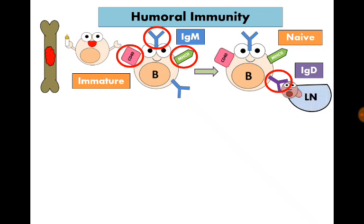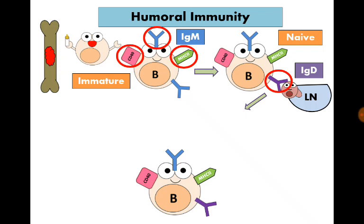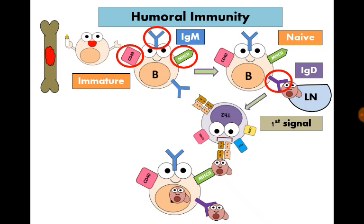One day a circulating B cell while passing in a lymph node meets an antigen which it can recognize by its receptors and thus activation process of these B cells starts. The first signal for activation is the attachment between the antigen and the immunoglobulin D which is the B cell receptor. The B cell internalizes the antigen and shows it on its surface attached to MHC class 2 molecule and presents it to a specific T helper 2 cell.